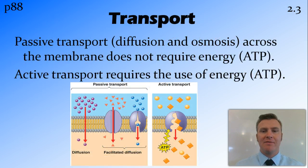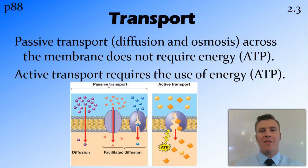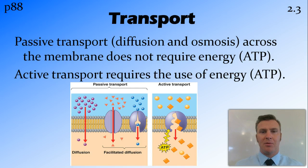We have two types of transport. Passive transport, which we're going to look at with diffusion and osmosis, does not require energy — so no ATP is used for passive transport. On the other hand, active transport does require the use of energy, so ATP made from respiration in the mitochondria needs to be used up.